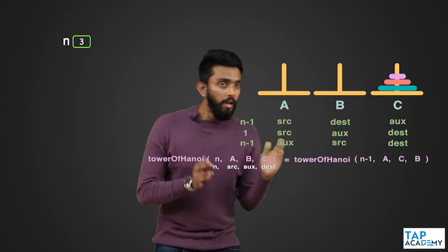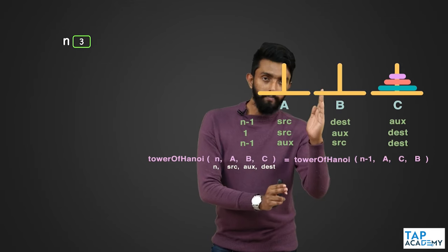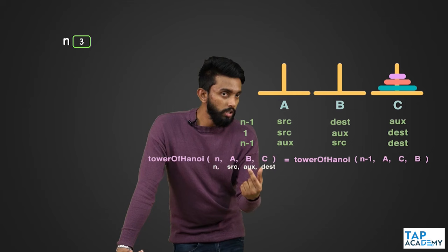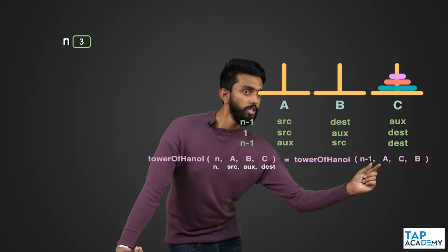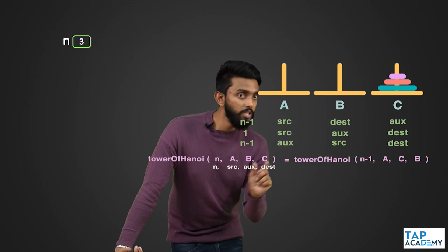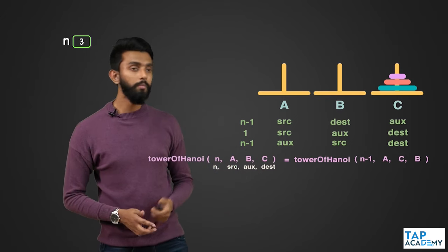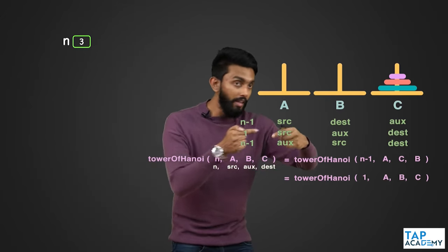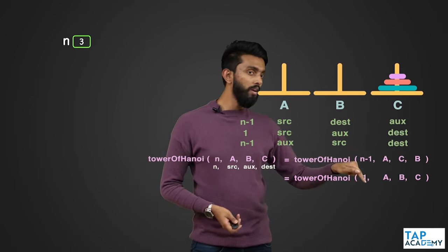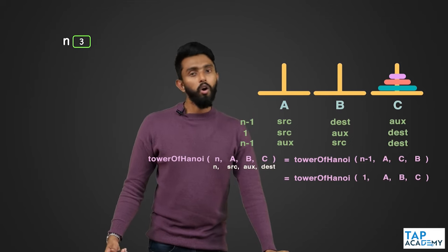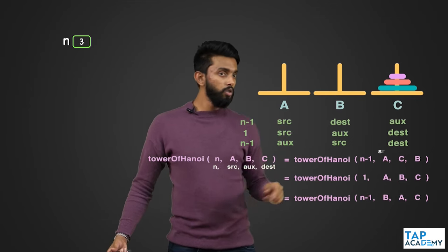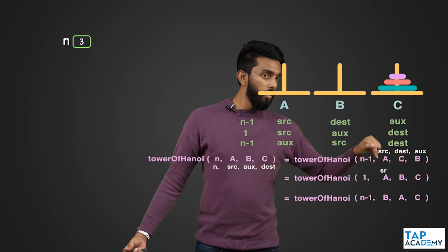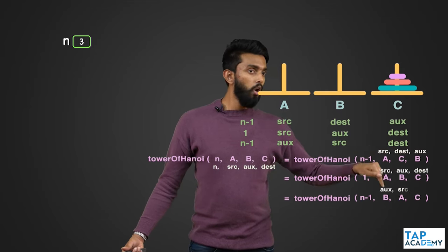The first call moves n−1 discs: source stays A, destination becomes B, auxiliary becomes C — so we pass (n−1, source, destination, aux) as (A, B, C). The second call moves 1 disc from A to C, with B as auxiliary. The third call moves n−1 discs: auxiliary B becomes the new source, A becomes auxiliary, and C remains the destination — so we pass (n−1, aux, source, dest).